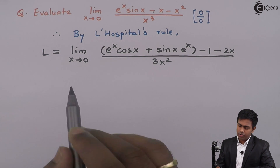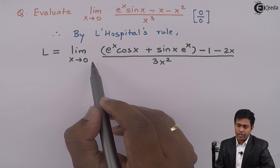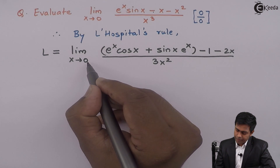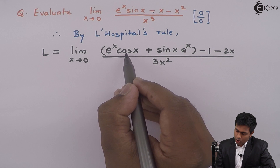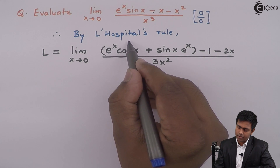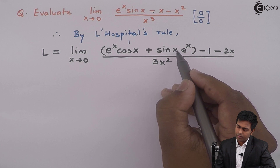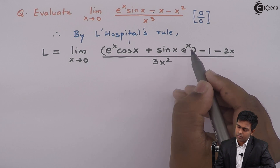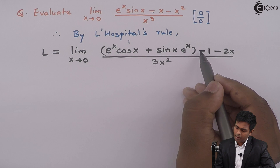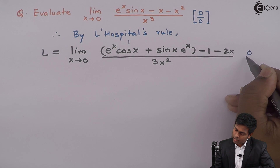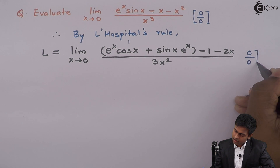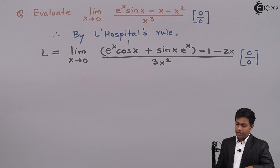Now we substitute x as 0 to check if we still have an indeterminate form. cos 0 is 1, e raised to 0 is 1, so the first term gives 1. sin 0 is 0, so that term is 0. We get 1 plus 0 minus 1 minus 0, which is 0 in the numerator. The denominator gives 3 times 0 squared, which is 0. So we are still getting the indeterminate form 0 upon 0.